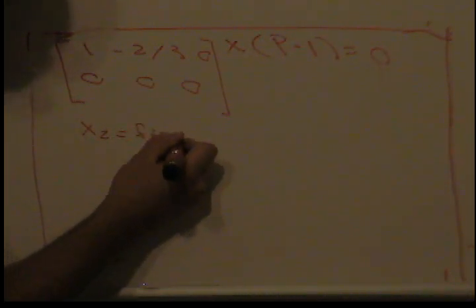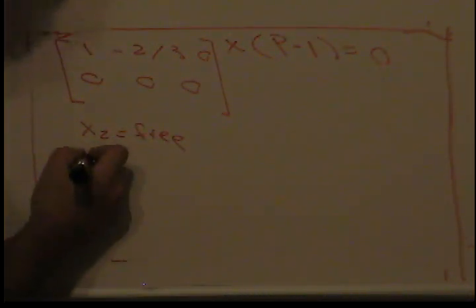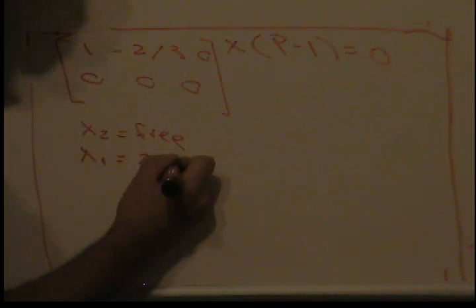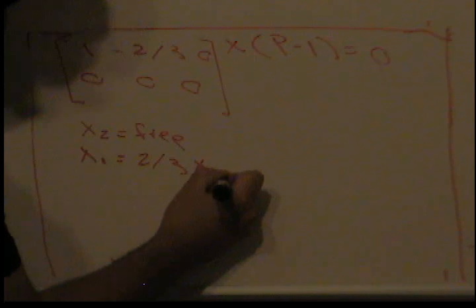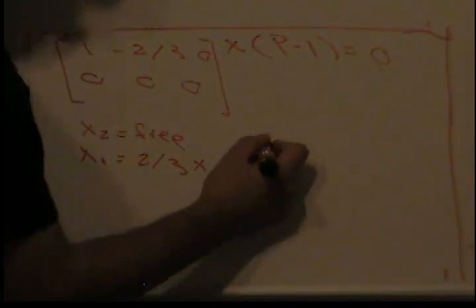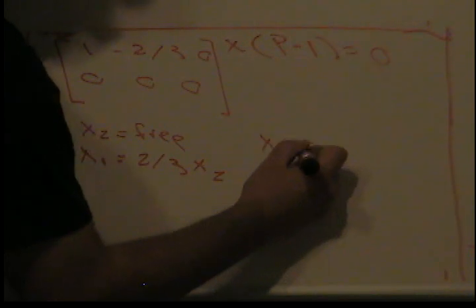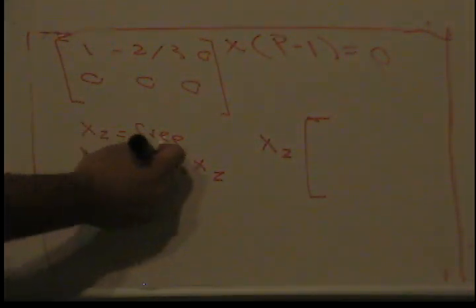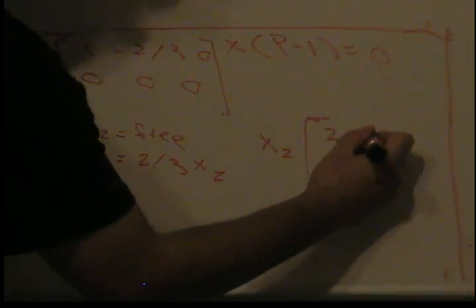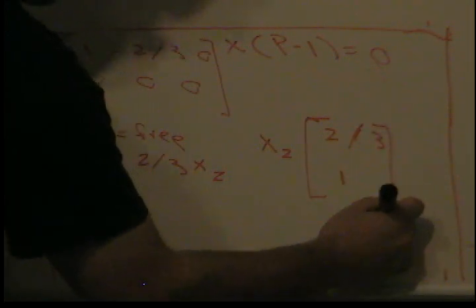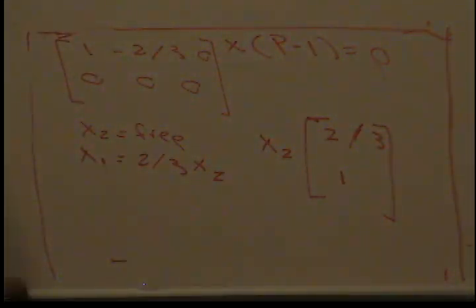It's a free variable, it can be whatever. And our X1 equals 2/3 times X2. So if I write this in vector form, it's going to be X2 times the vector 2/3 and 1.